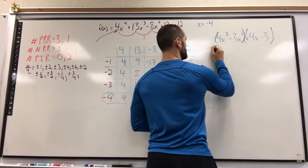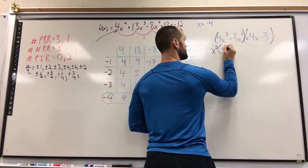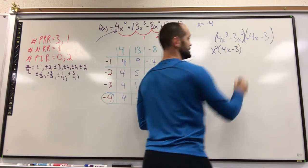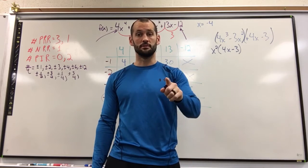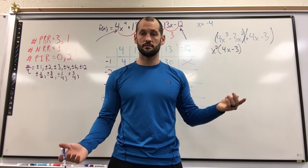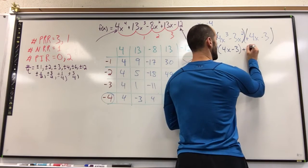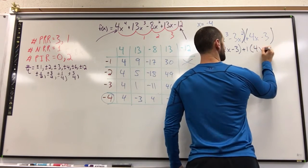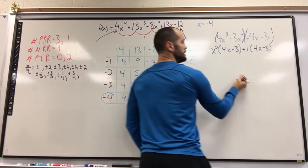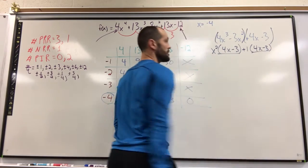Front group shares x squared, leaving us with 4x minus 3. Now the back, you may look at that and go, they don't share anything. Debatable. They always share something. One. You can pull a one out. In this case, you should pull a one out, leaving us with 4x minus 3.